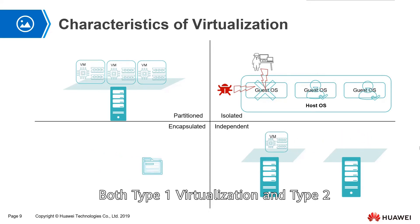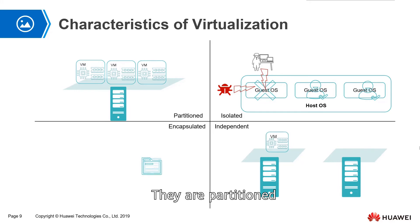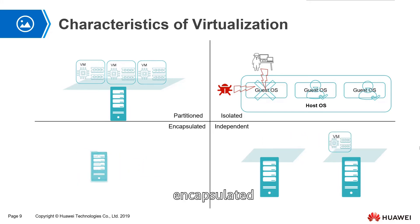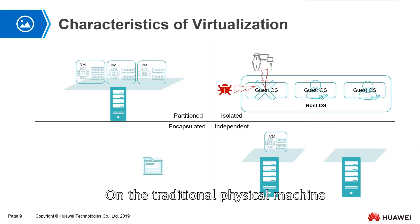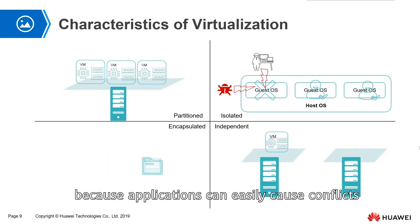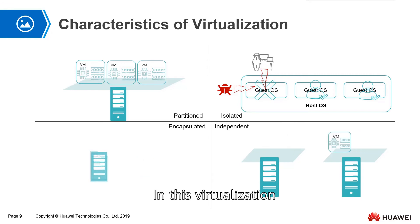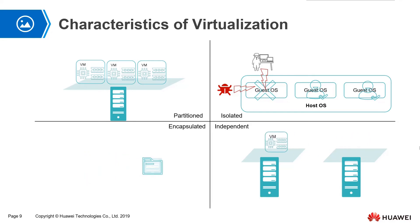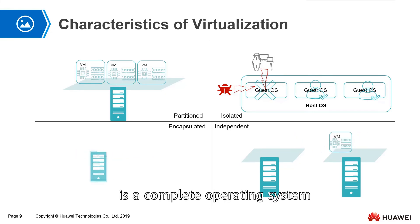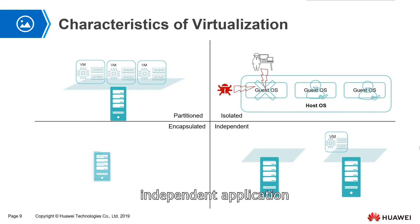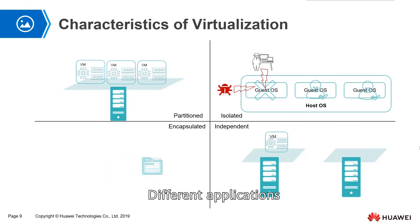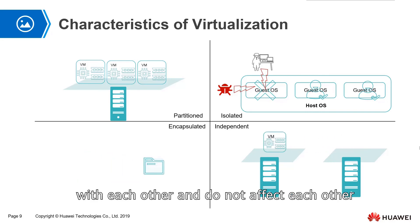Both type 1 and type 2 virtualization share four features: partitioned, isolated, encapsulated, and independent. Regarding partition: on a traditional physical machine, we don't usually install many applications because they can easily cause conflicts. With virtualization, we can create many virtual machines on one physical machine, each with its own complete operating system running independent applications. Different applications installed on different operating systems do not interfere with each other.